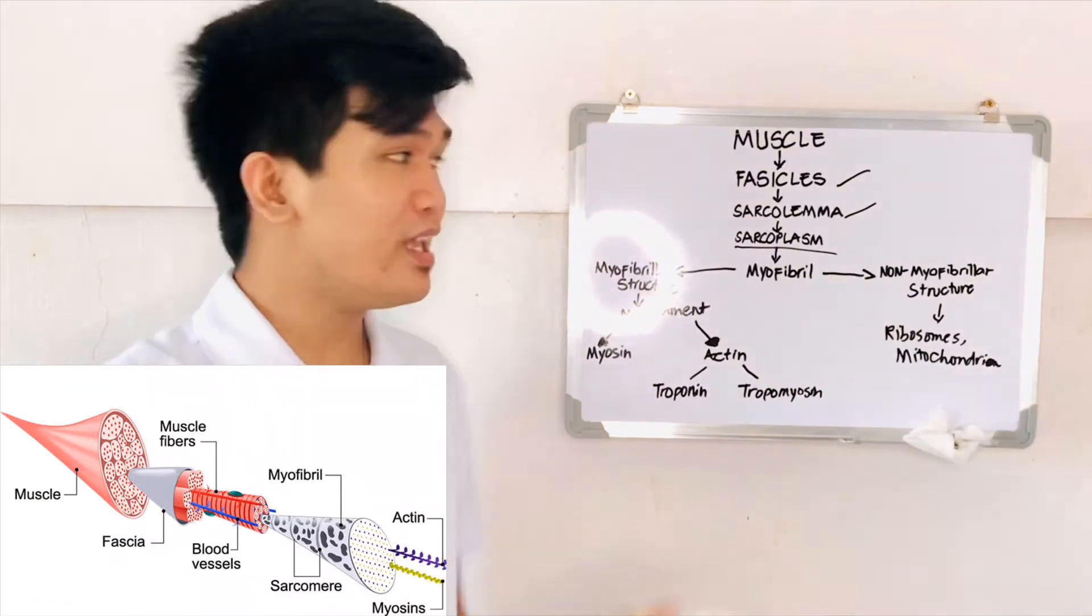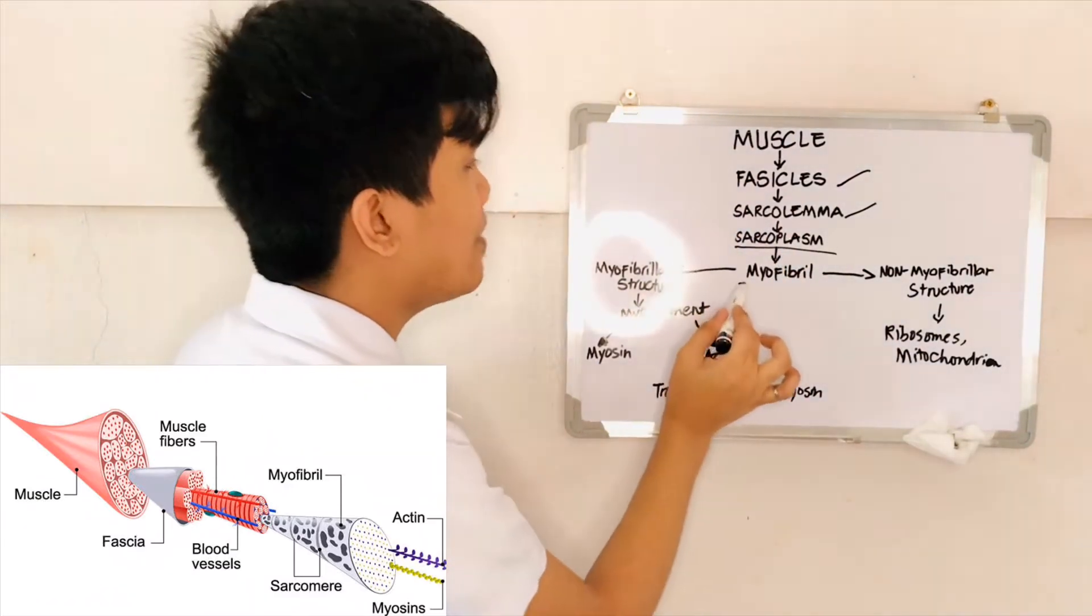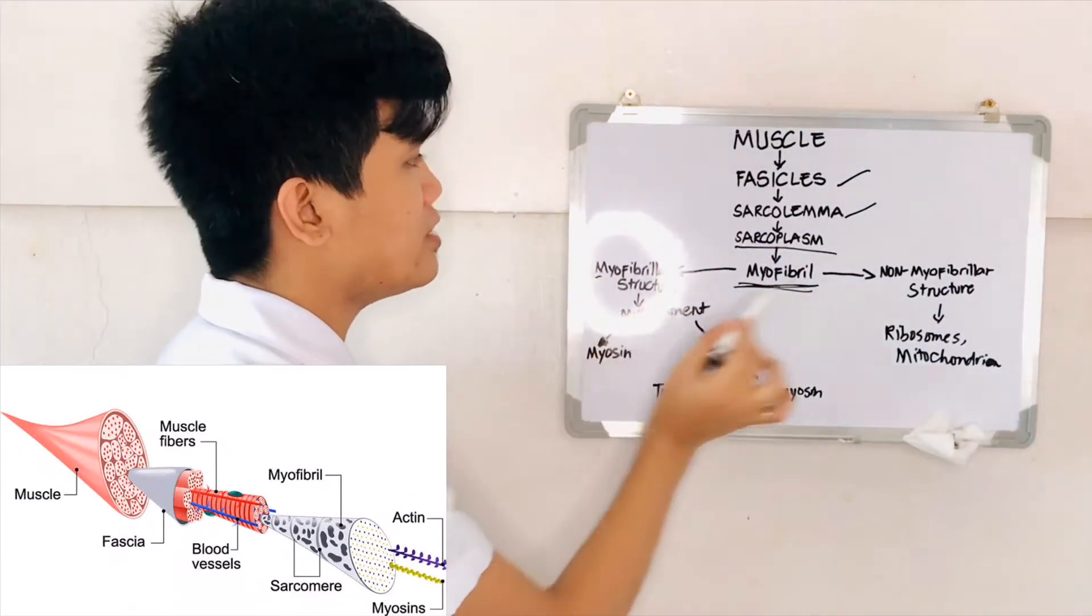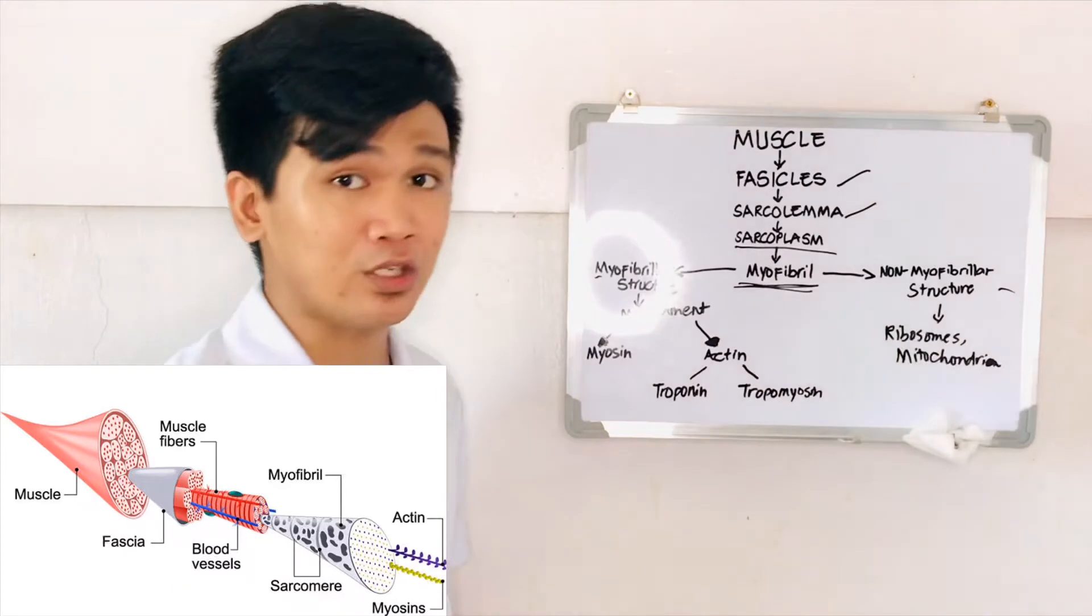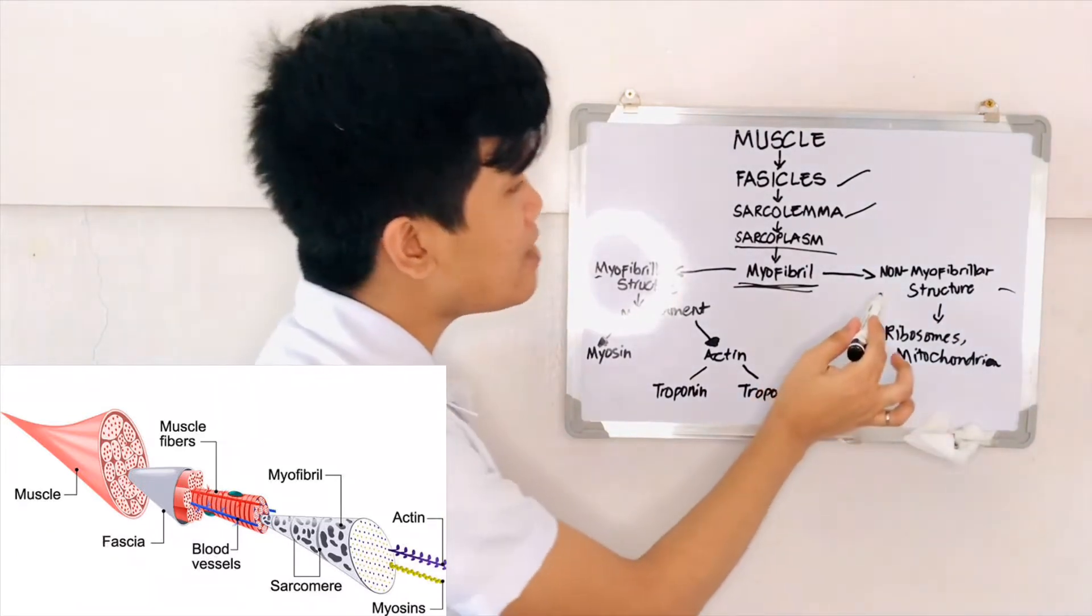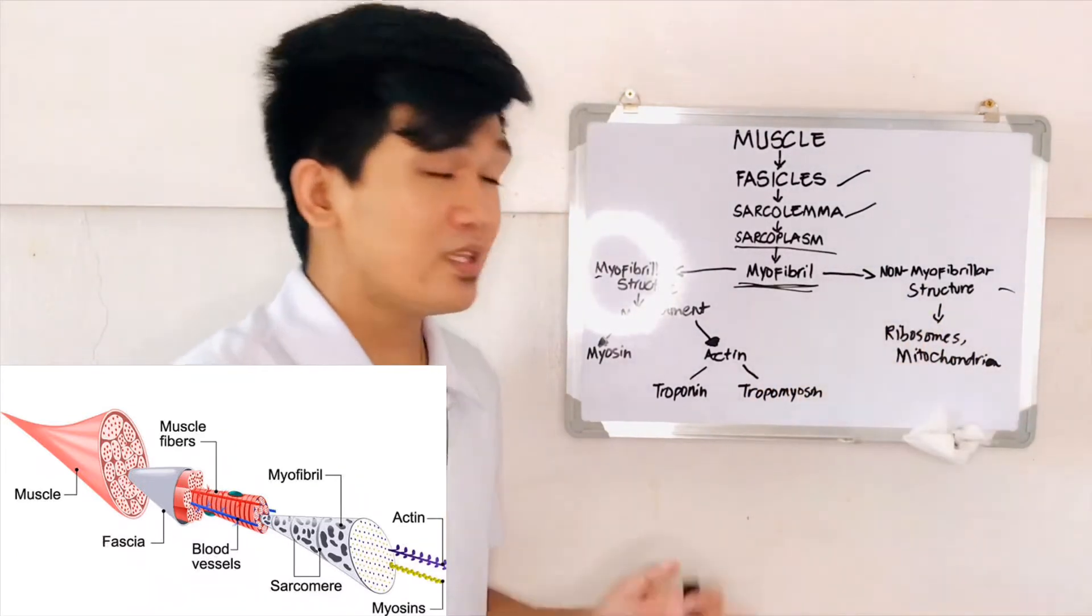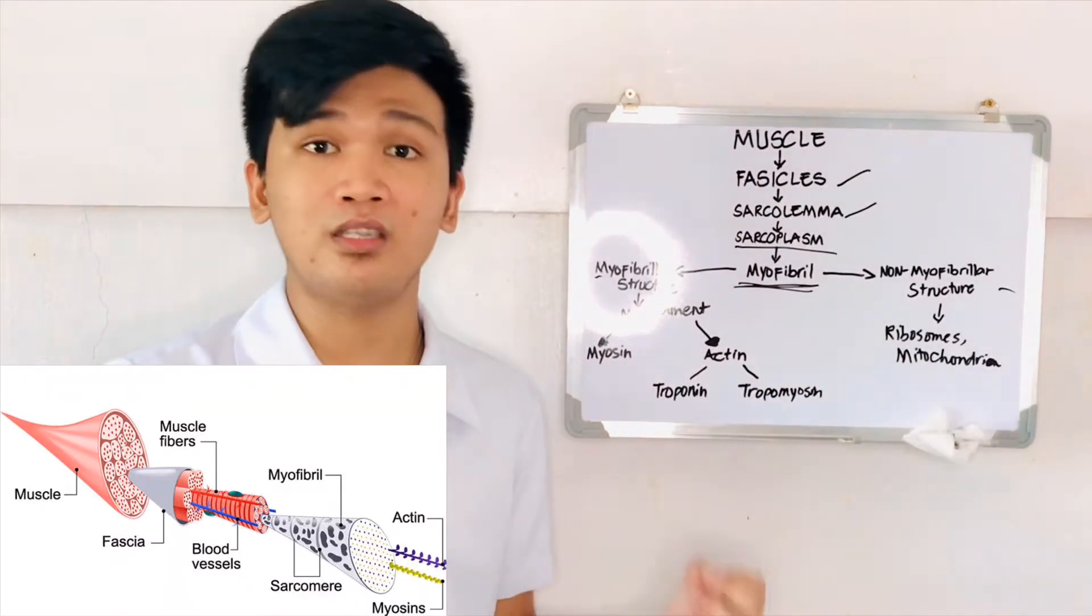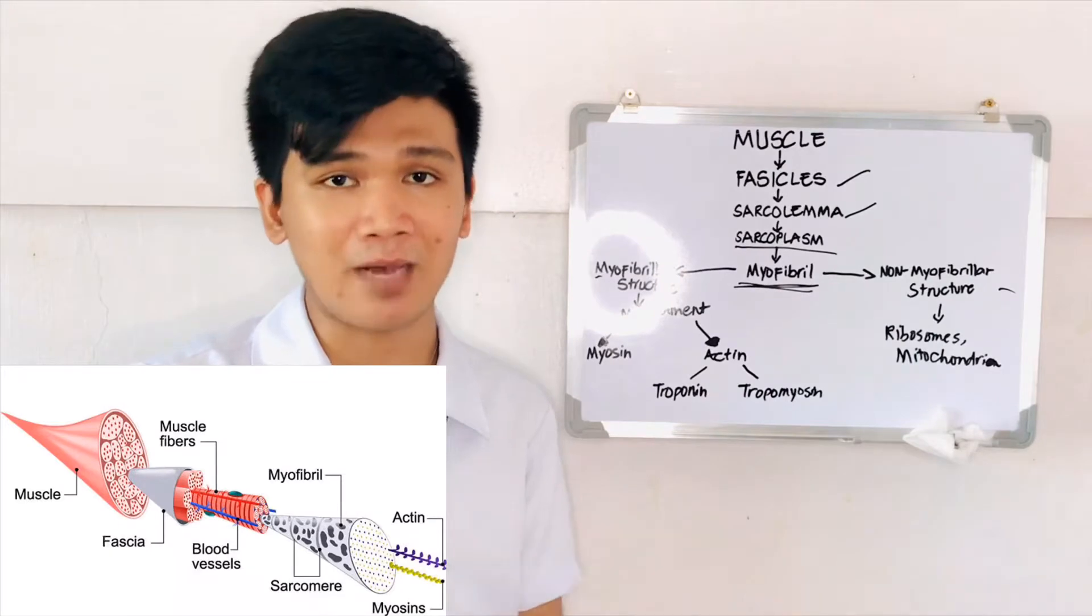And then contained in sarcoplasm is a myofibril that is divided into myofibrillar structures and non-myofibrillar structures. When we say non-myofibrillar structures, these are made up of ribosomes, mitochondria, and others that are responsible for cell metabolism.